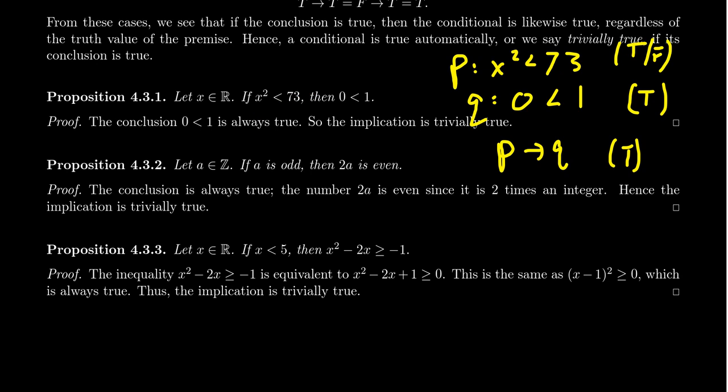Typically when one writes a mathematical proof, if a statement doesn't require the premise, one typically just ignores the premise because it's not doing anything — you're sort of overly complicating it. But from a logical sense, this is a valid proof.